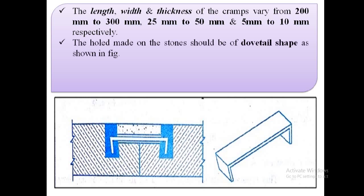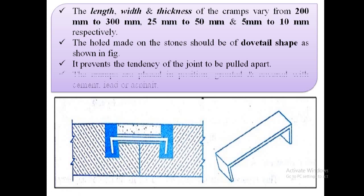The holes made on the stones should be of dovetail shape, as shown in this figure. It prevents the tendency of the joint to be pulled apart. The cramps are placed in position, grouted, and covered with cement, lead, or asphalt.